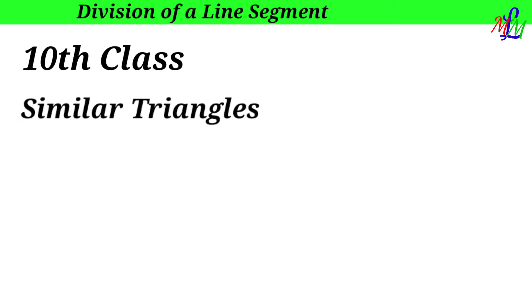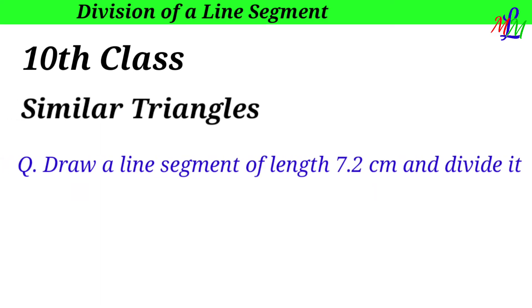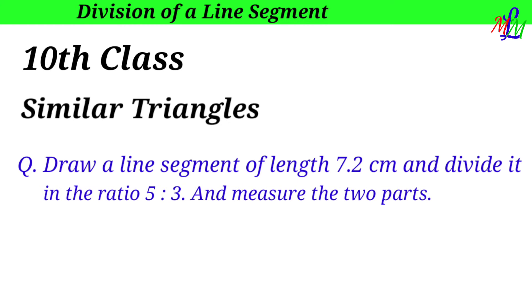Hello students, welcome to my channel. Today we are going to learn about construction. The question asks: draw a line segment of length 7.2 centimeters and divide it in the ratio 5 is to 3, and measure the two parts. So we need to divide the given line segment in the ratio 5 is to 3.